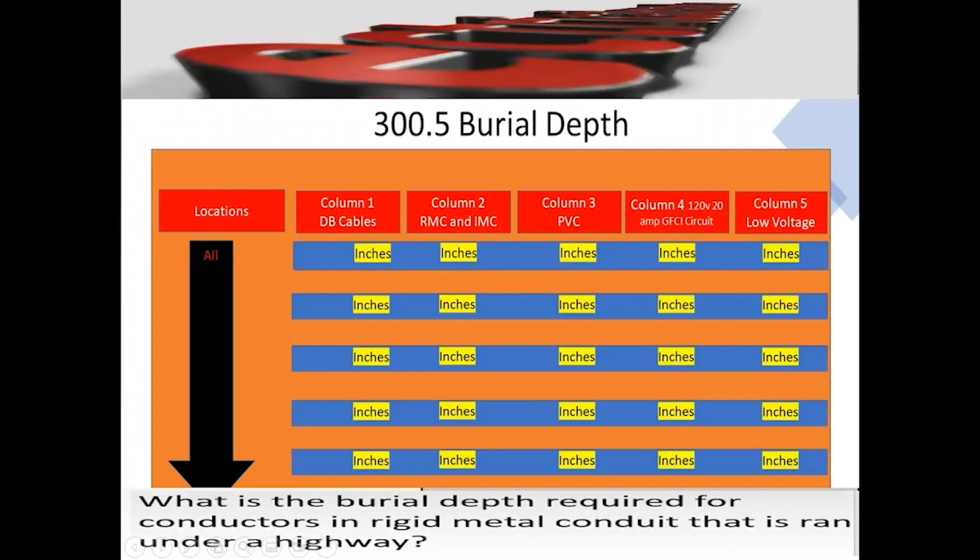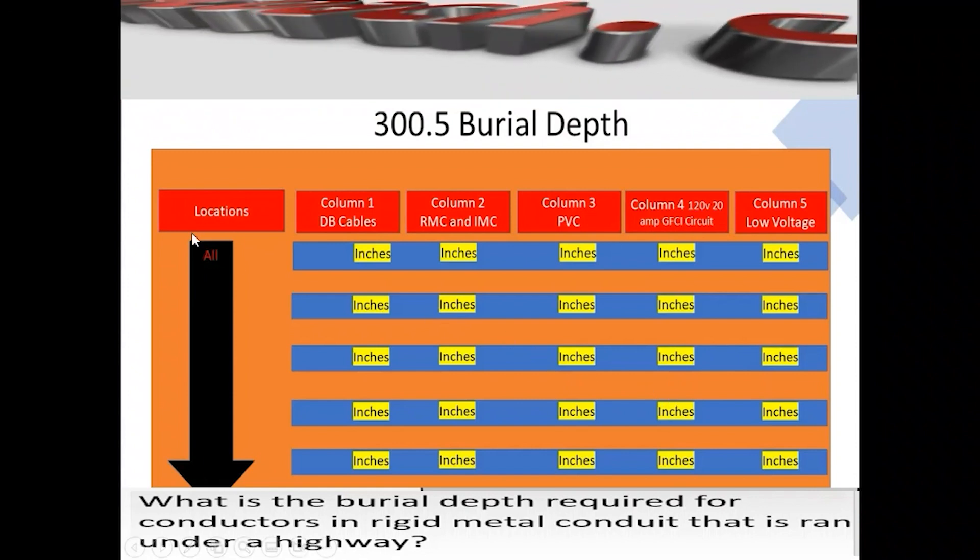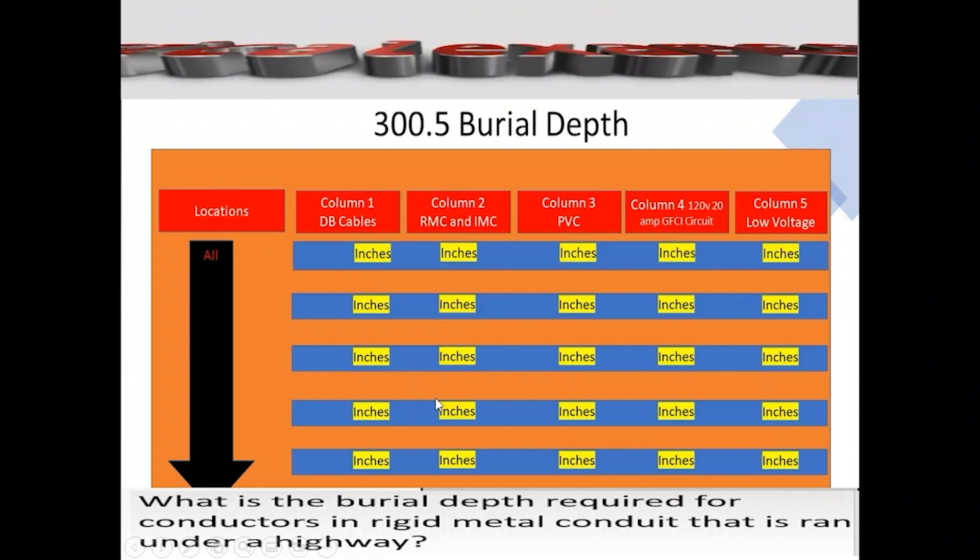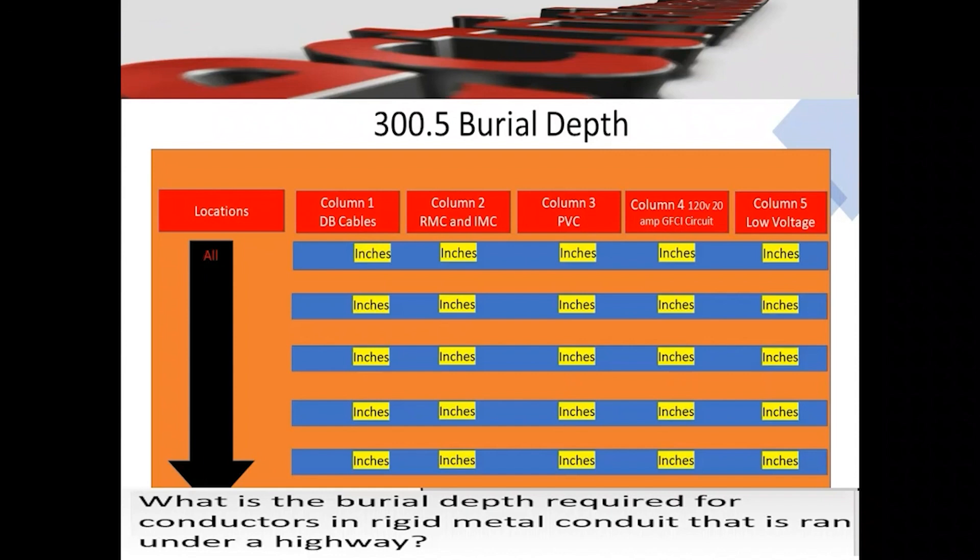So for this one, we're going to head to Table 300.5. We're going to start on the left-hand side and we're going to look for our location of wiring. Then we're going to come across and we're going to find our column, whether it's column one, two, three, or four. Then we're going to come down and tee off with how deep it's required to be. And in this case, it's 24 inches.